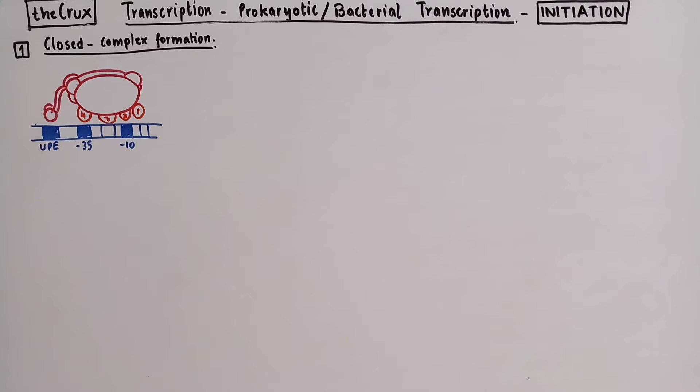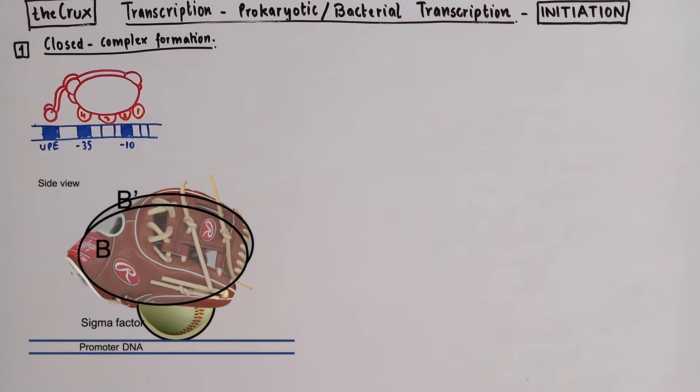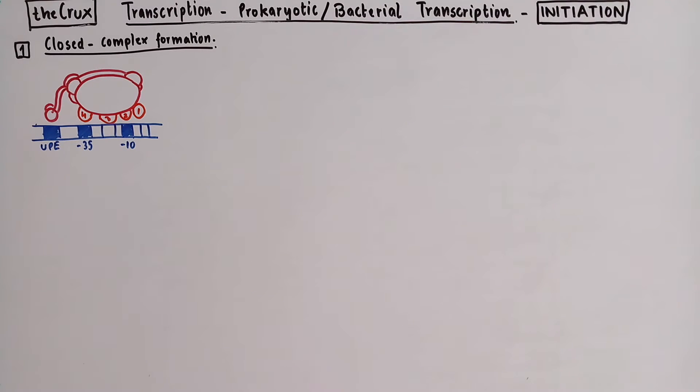This cartoon here depicts the side view representation of the holoenzyme. As an analogy, think of this view of the holoenzyme as the side view of a baseball glove holding the ball where the glove is the core enzyme and the front and the back portion of the glove is split among the beta subunits. And the ball here represents the sigma factor that makes contact with promoter DNA. For simplicity, we will ignore the UPE and alpha CTD domains.